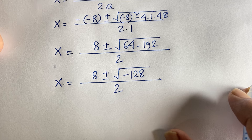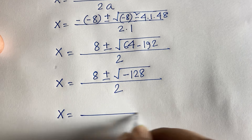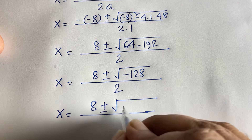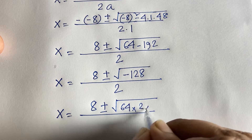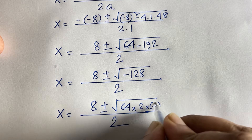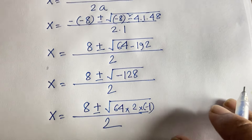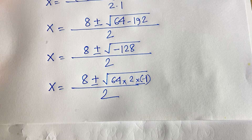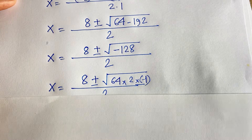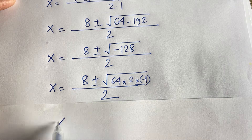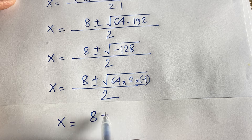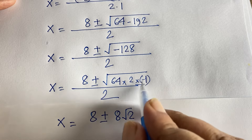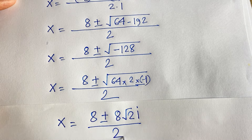So 64 minus 192 equals minus 128. We get x equals 8 plus or minus square root of minus 128, over 2. Now, minus 128 equals 64 times 2 times minus 1. So square root of minus 128 equals 8 times square root 2 times i.